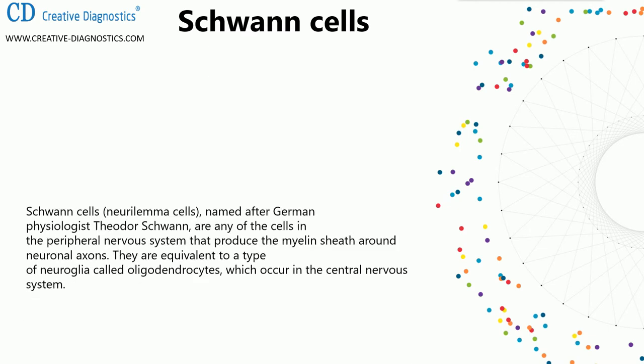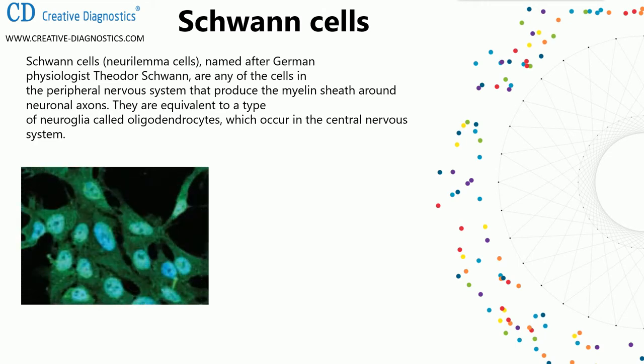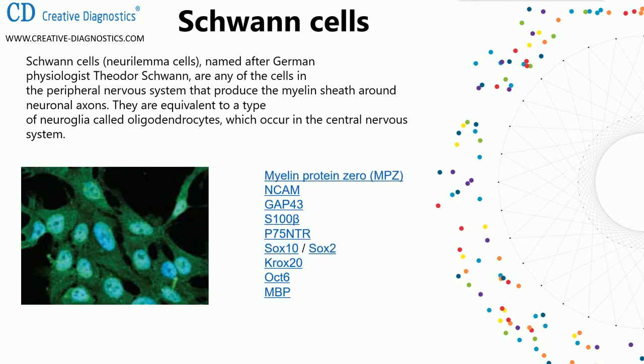Eighth: Schwann cells. Schwann cells, named after German physiologist Theodor Schwann, are cells in the peripheral nervous system that produce the myelin sheath around neuronal axons. They are equivalent to oligodendrocytes, which occur in the central nervous system. Schwann cell markers include myelin protein zero (MPZ), GAP43, S100B, P75 NTR, SOX10, SOX2, PROX1, OCT6, and MBP.